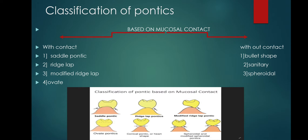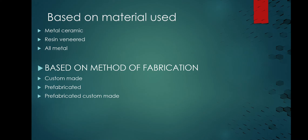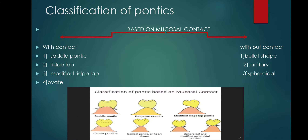The classification of pontics has three types: based on mucosal contact, based on material used, and based on method of fabrication. For the classification based on mucosal contact — if mucosal contact is present, pontics are classified as saddle pontic, ridge lap, modified ridge lap, and ovate pontic.